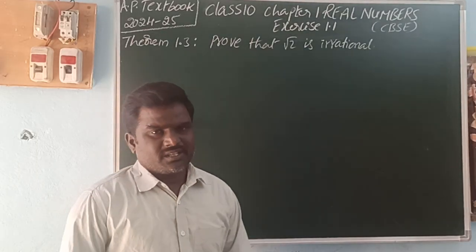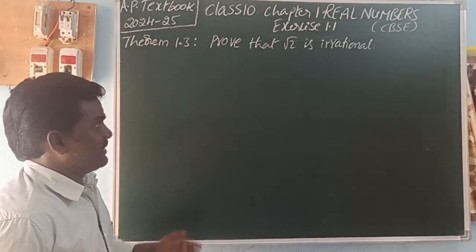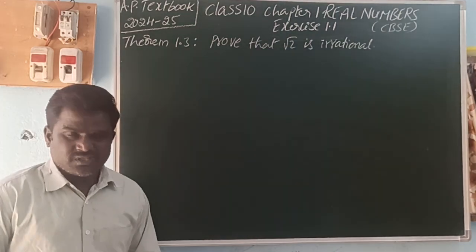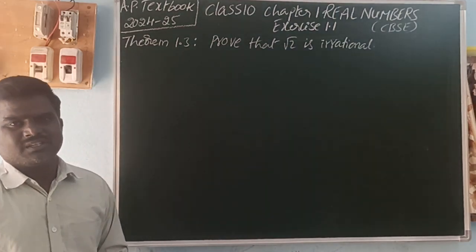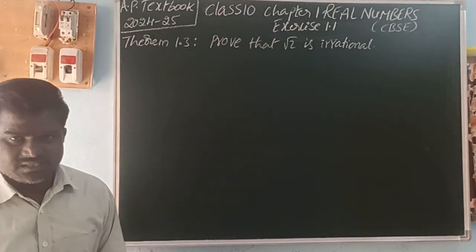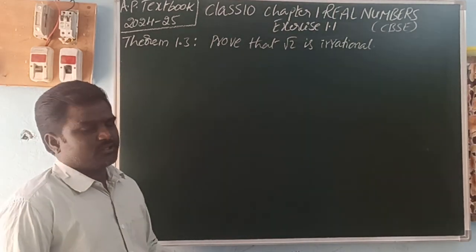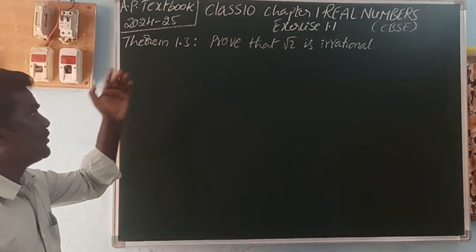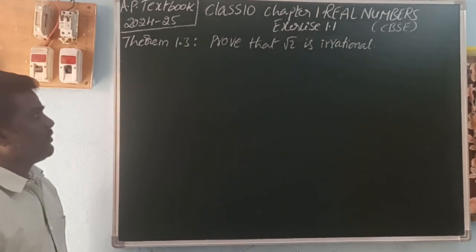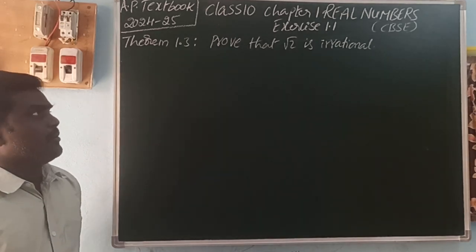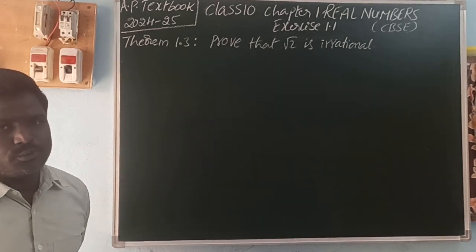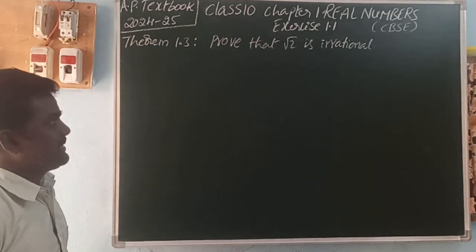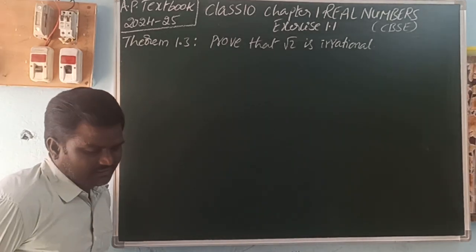So Theorem 1.3 — this is the new CBSE syllabus for AP, 2024-25. Theorem 1.3: prove that root 2 is an irrational number.